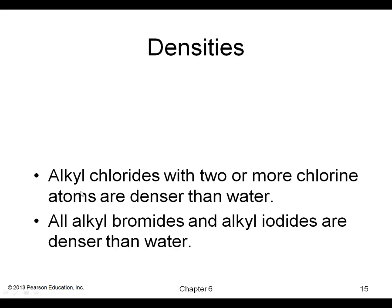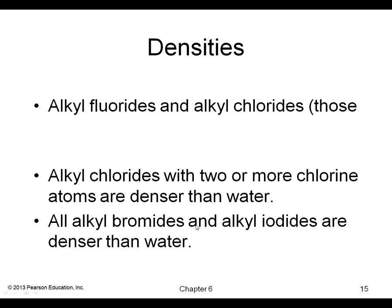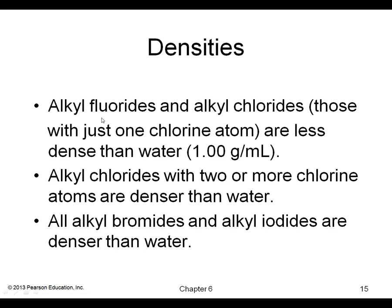Regarding densities, alkyl chlorides with two or more chlorine atoms are denser than water, and all alkyl bromides and iodides are denser than water — so they tend to be on the bottom layer when mixed with water. Alkyl fluorides and chlorides with just one chlorine atom tend to be less dense than water, so these kinds tend to float on top of water.